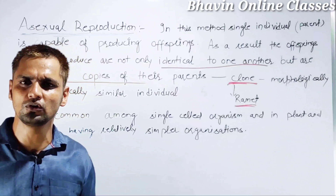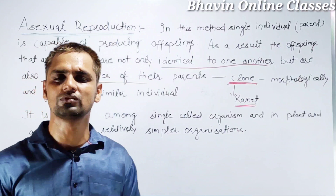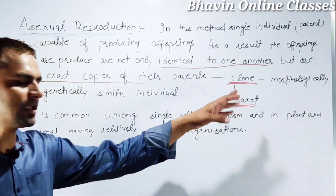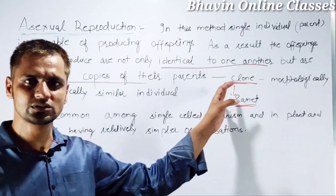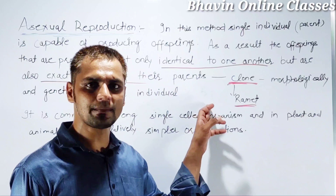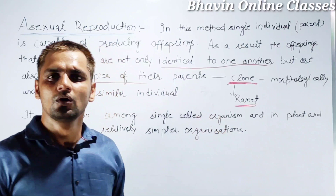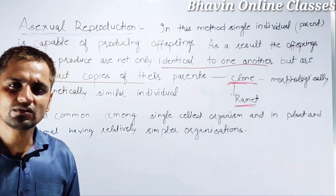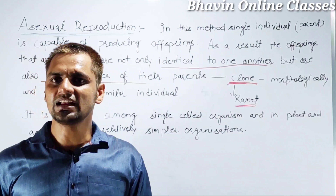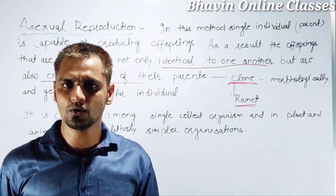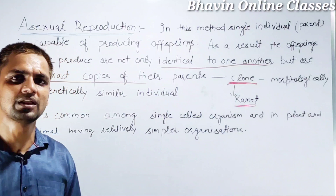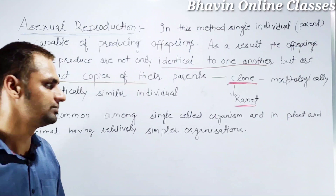A clone is a morphologically and genetically similar individual. The collection of clones of a single individual is called a ramet. Asexual reproduction is commonly seen in single-celled organisms and in plants and animals having simpler organization.